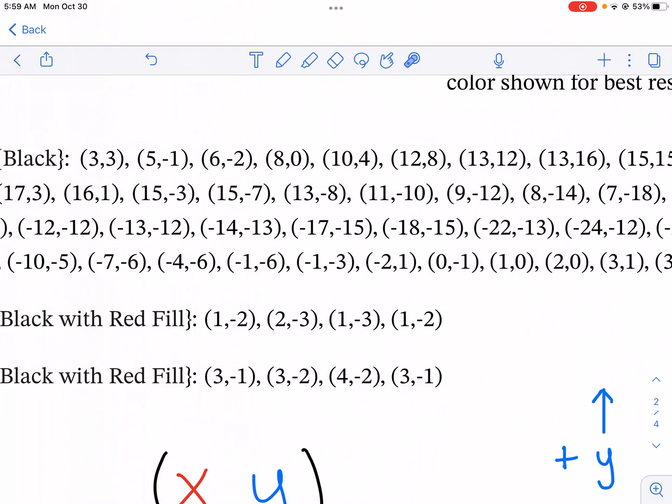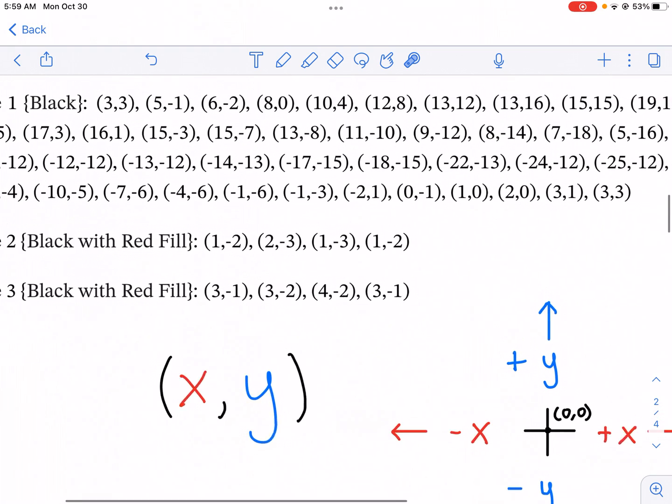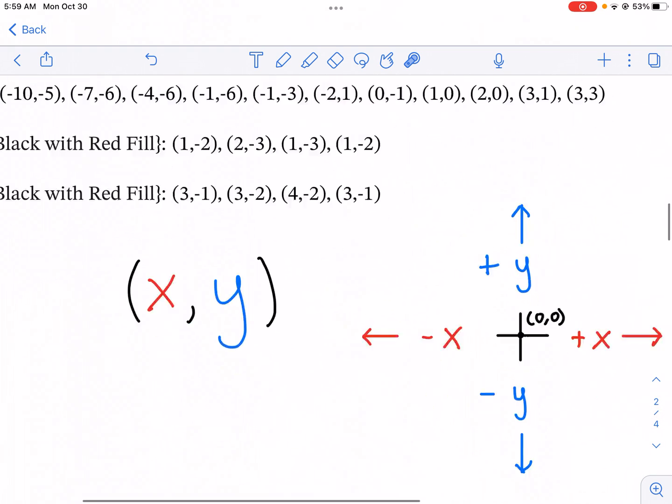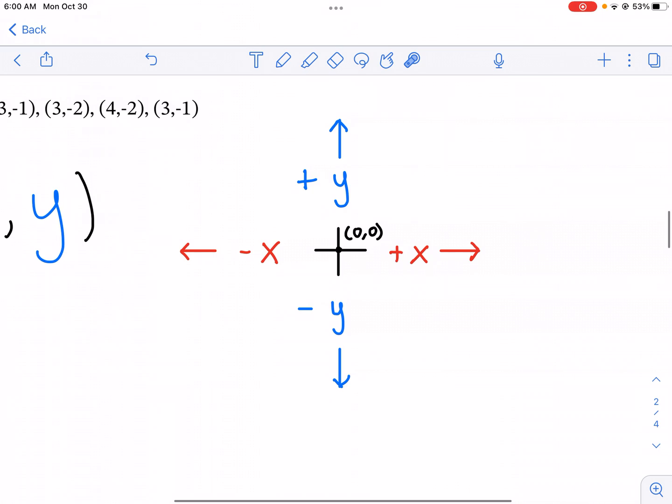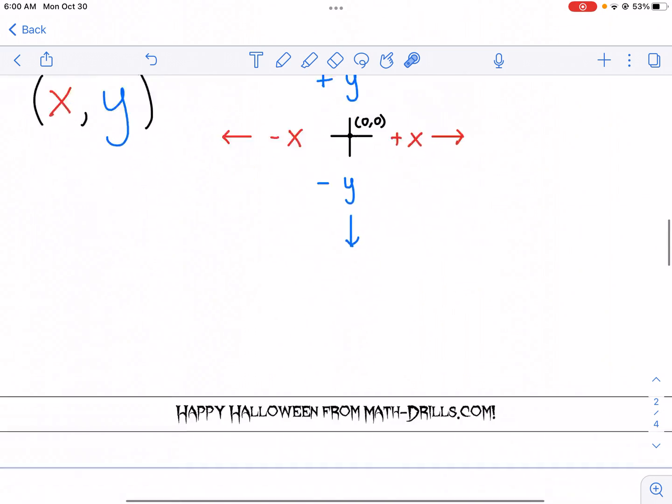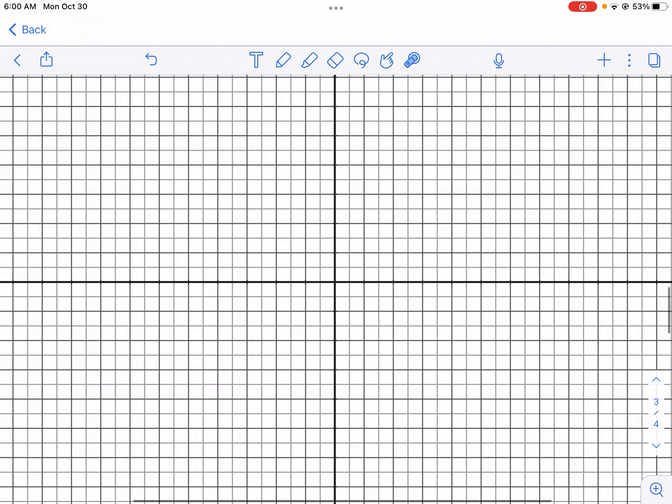So in this first one, we have (3,3). What we're first going to do is we are going to plot 3 to the right because that first number is 3. And then we're going to plot 3 up because the second number is 3. So let's take a look.